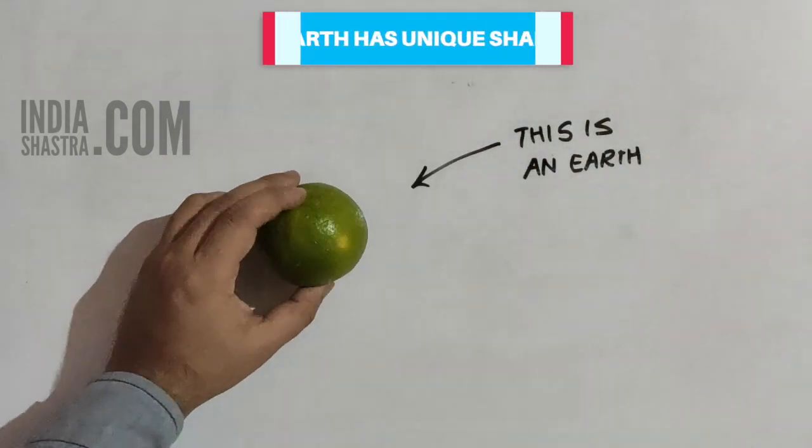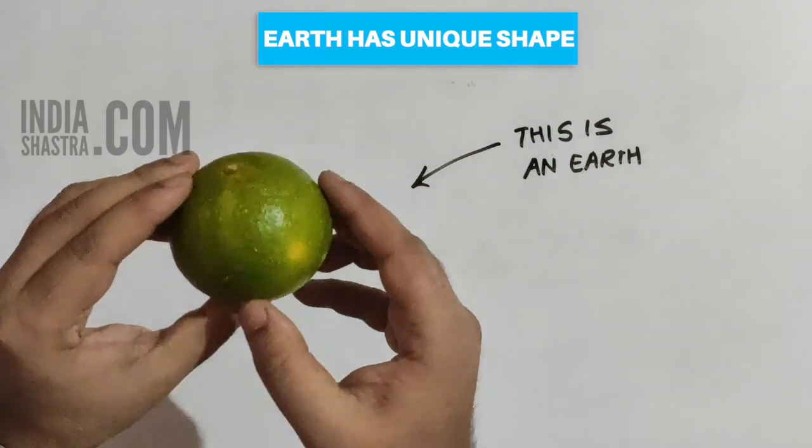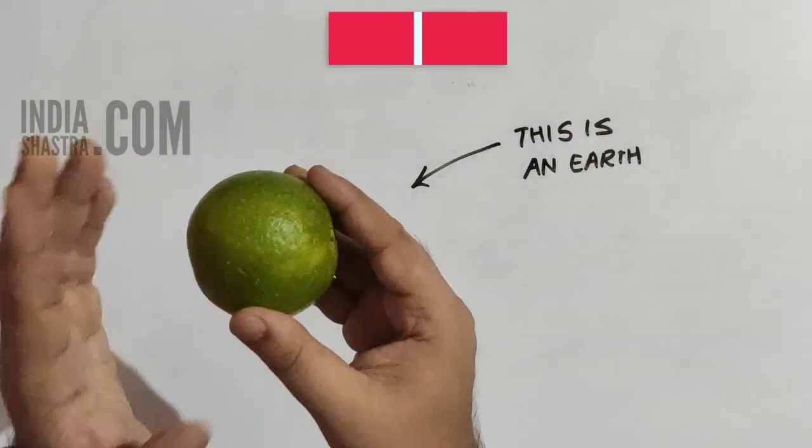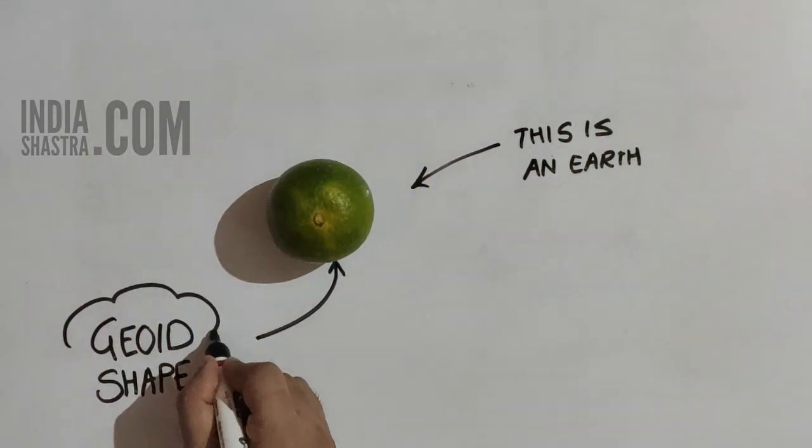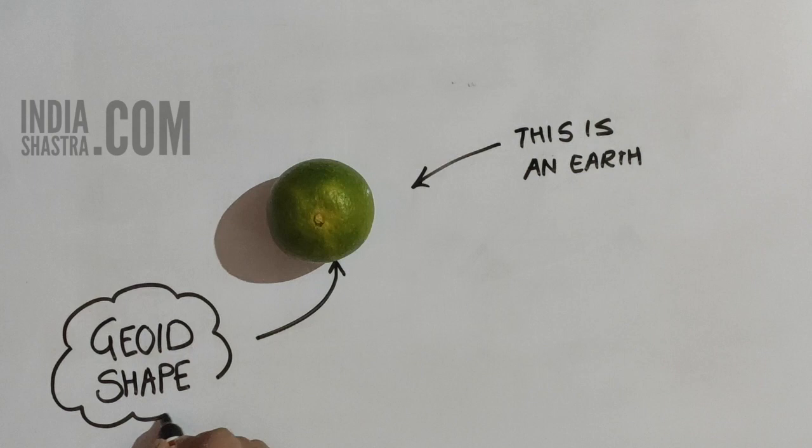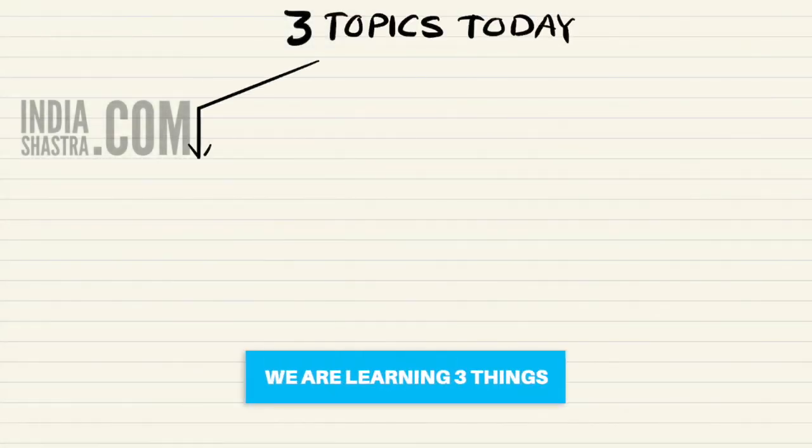We have seen in the last video that the Earth's shape is unique. Earth is bulged at the equator and flattened at the poles. This unique shape of Earth is called geoid. In this video, we will talk about three things: the globe, latitude, and longitude.